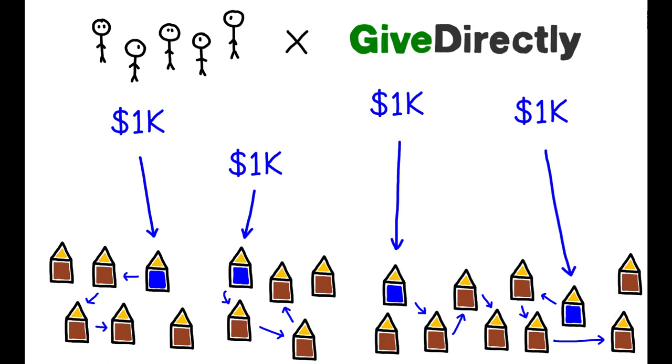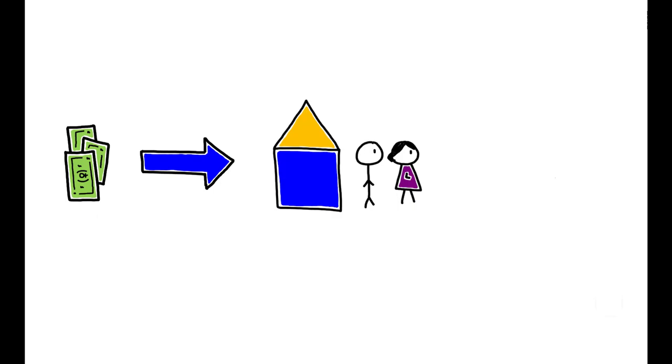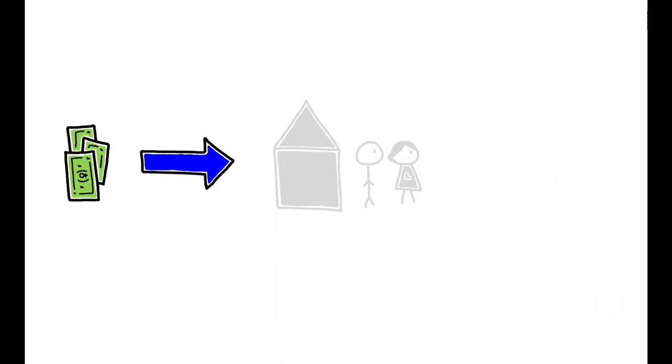This type of large-scale cash transfer program has become more common in developing countries, and many researchers have studied their effects on recipients. But what sets this paper apart is the wider focus. The key question here is not how the recipients themselves were impacted, but how the ripple effects spread through the rest of the economy.